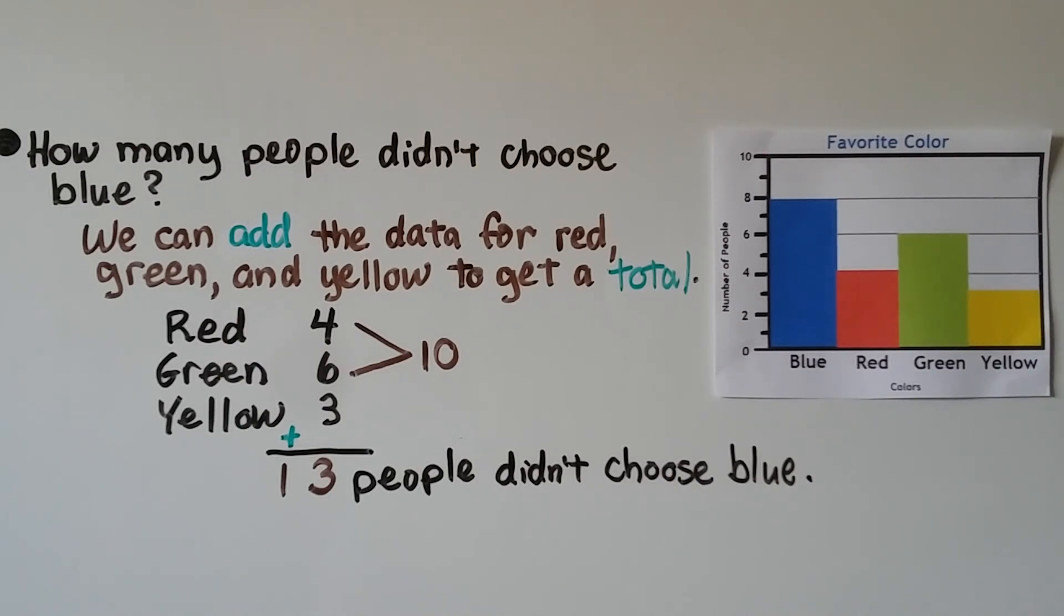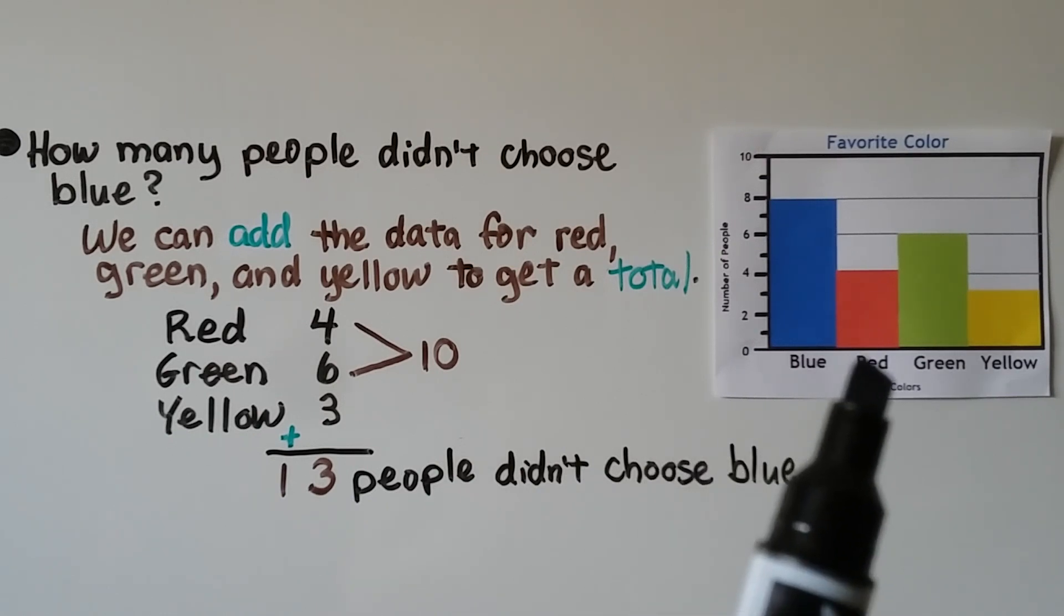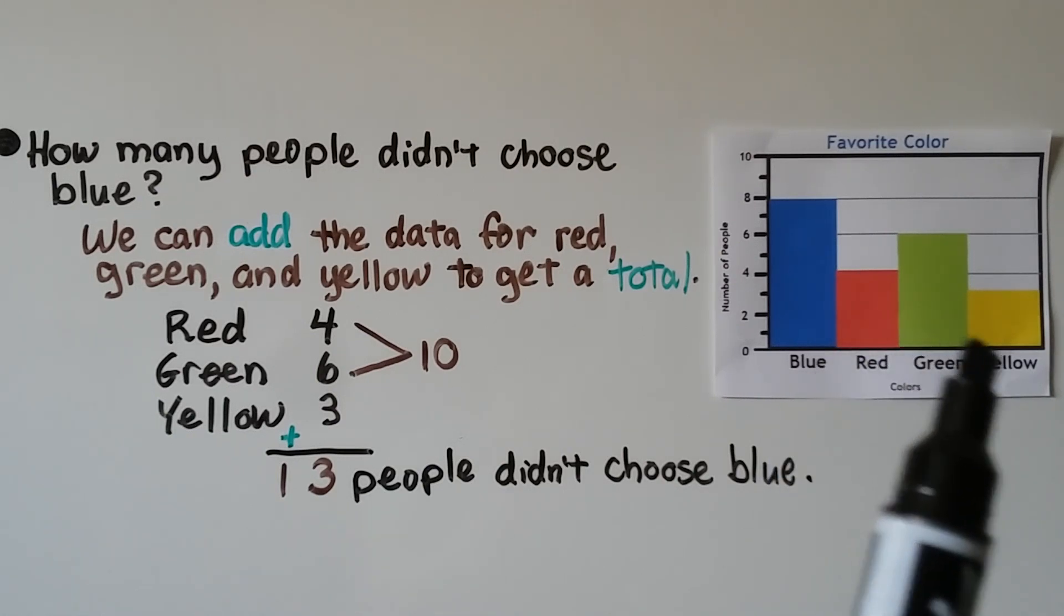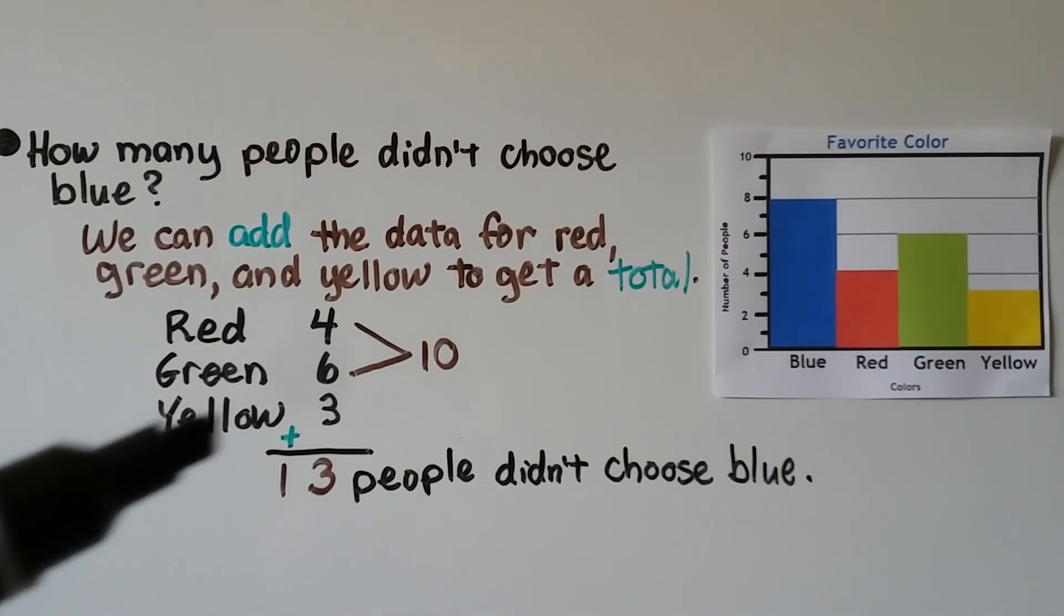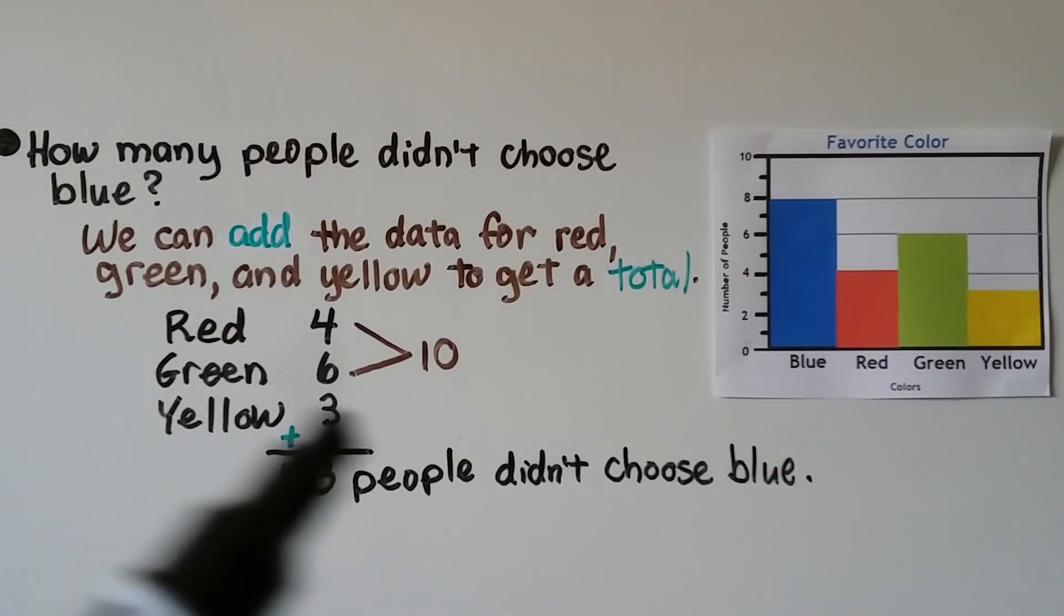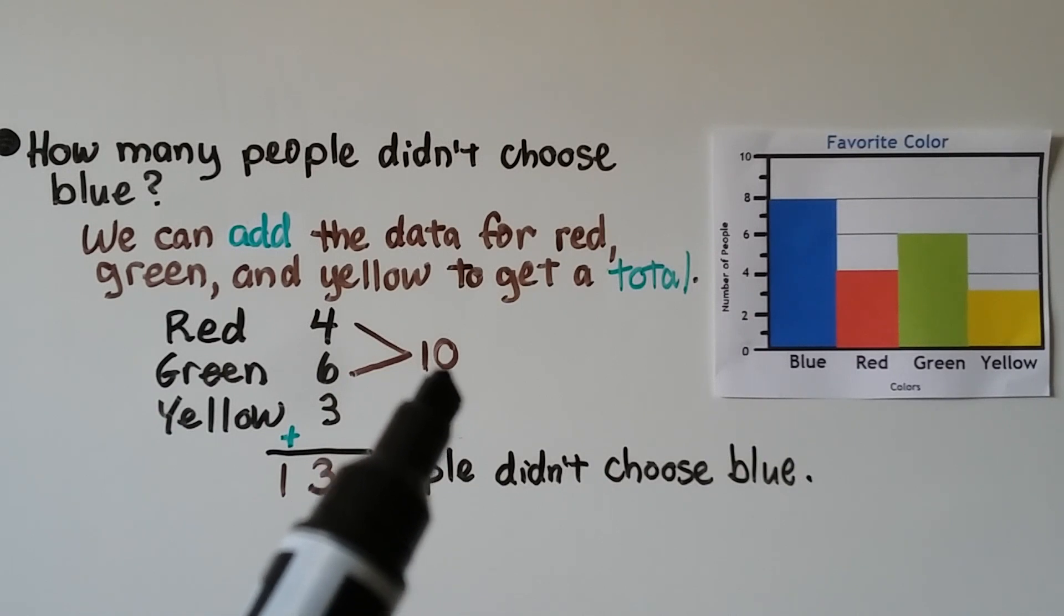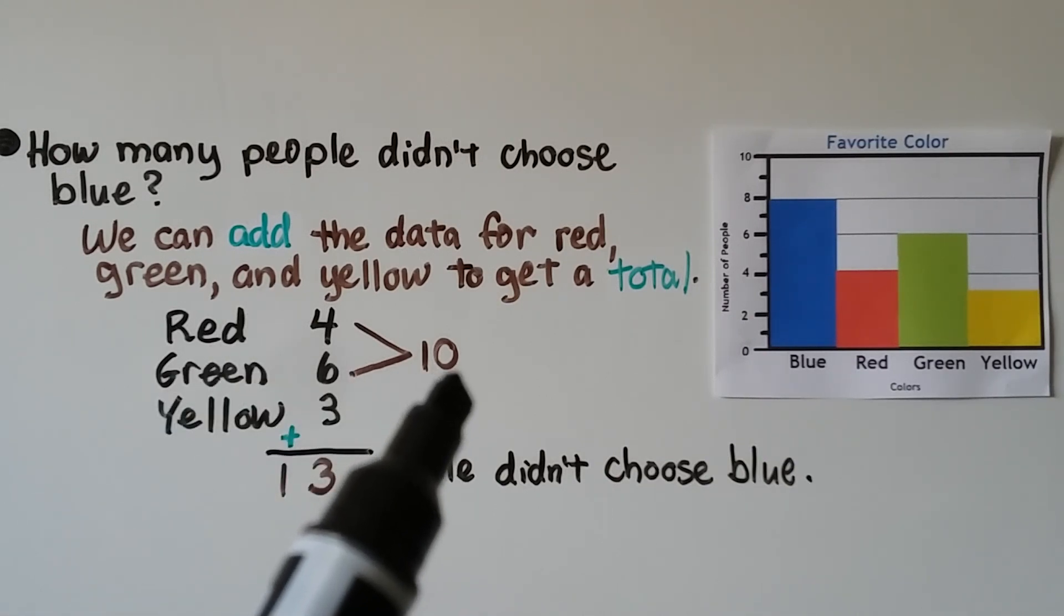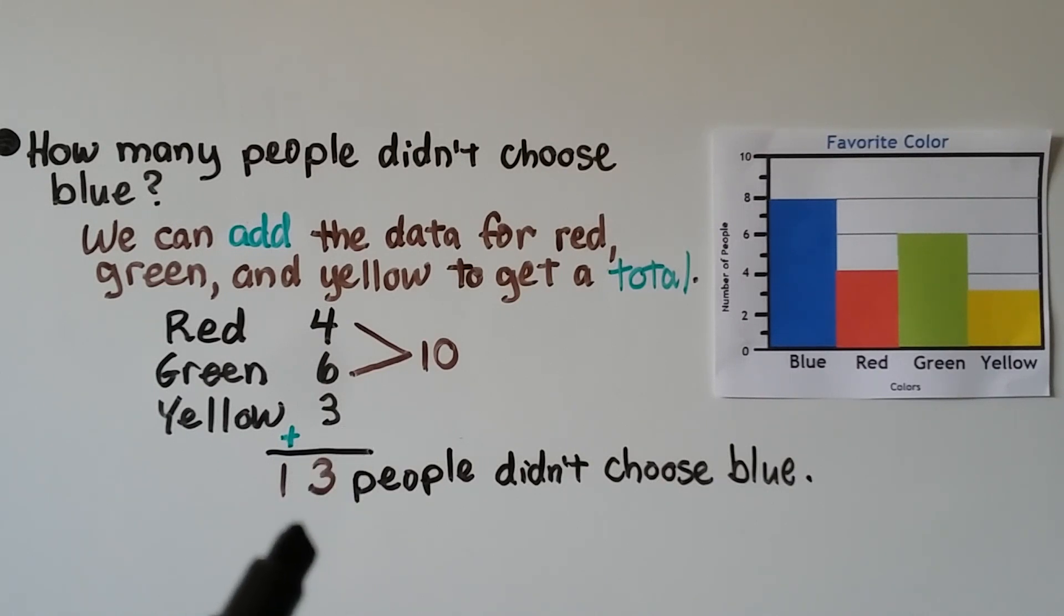How many people didn't choose blue? We can add the data for red, green, and yellow to get a total. Red is four, green is six, yellow is three. We do 4 + 6 + 3. Four plus six is ten—they're friendly numbers because they make a ten. Then we can do 10 + 3. We know it's thirteen people didn't choose blue.